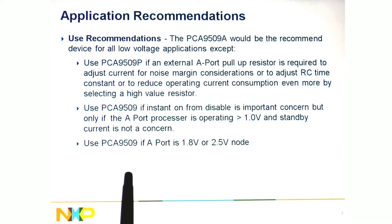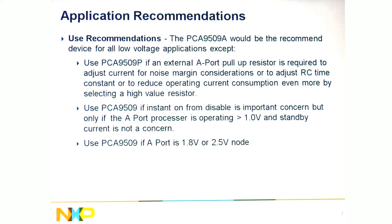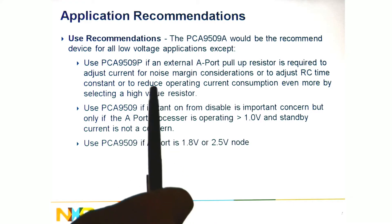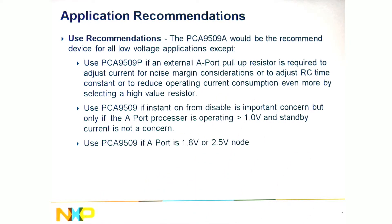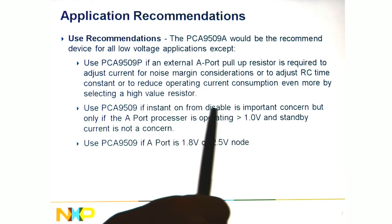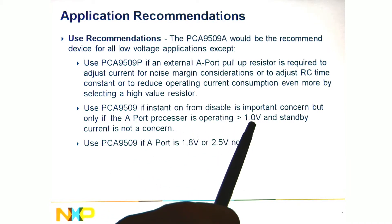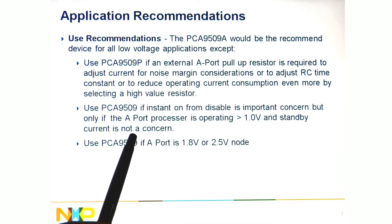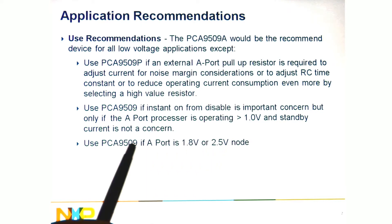For recommendations: the PCA9509A is the recommended device for low voltage applications as it's the newer part. The exception would be the 9509P if you want to use an external pull-up on the A side to adjust the RC time constant yourself or for really low power applications. You would continue using the 9509 if you want instant-on from disabled, if your A processor side is not less than 1 volt, or if you're not concerned about standby current. Also, if the A port is at 1.8V or 2.5V nodes, you still need to use the 9509.